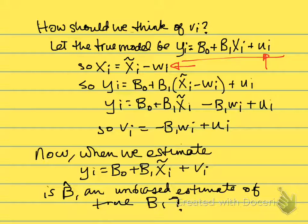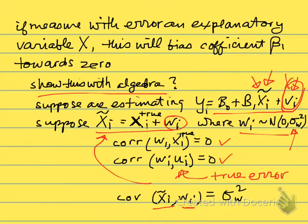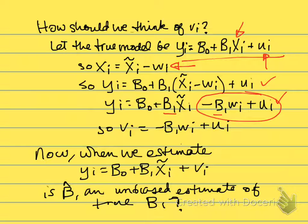Rearranging our definition of X̃, we have our true X is equal to X̃ minus wᵢ. So we'll substitute that into our equation here, and we get yᵢ equals β₀ plus β₁ times (X̃ minus wᵢ) plus uᵢ. We do a little bit of rearranging, bring the β₁ through, multiply it through, and now we can see that vᵢ is equal to -β₁wᵢ plus uᵢ.